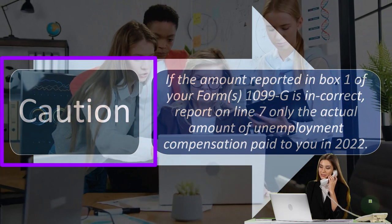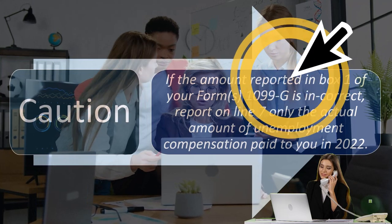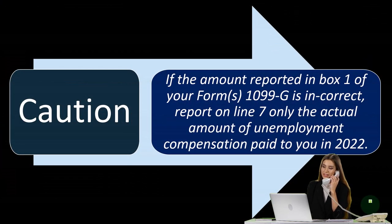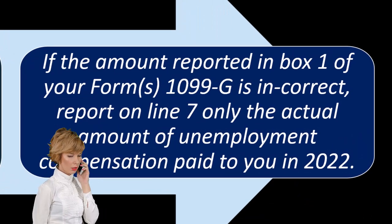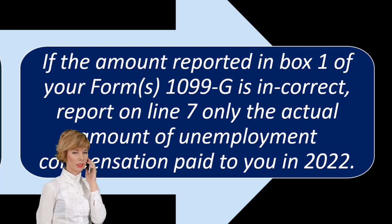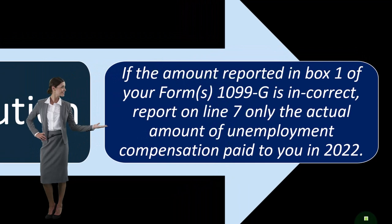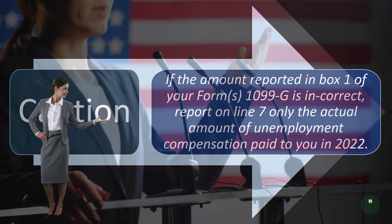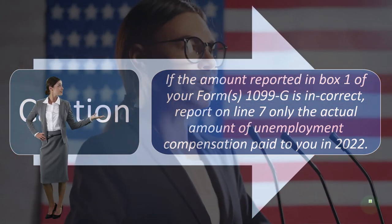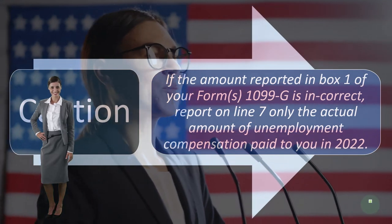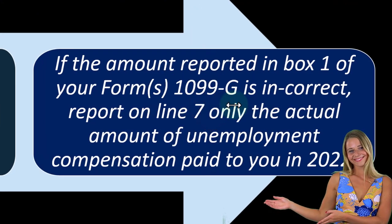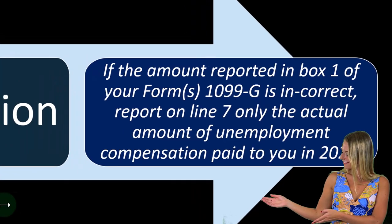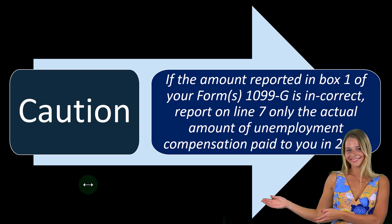Caution: if the amount reported in box 1 of Form 1099-G is incorrect, report on line 7 only the actual amount of unemployment compensation paid to you in 2022. If you received a 1099-G but didn't actually get unemployment, that may indicate fraud. Like any incorrect 1099, go back to the issuer and ask them to send a corrected 1099 to the IRS. If your 1099 doesn't match your tax return, the IRS will almost certainly question it. You don't want to report an incorrect amount; instead, resolve it with the issuer so the IRS receives an updated 1099 with correct information.